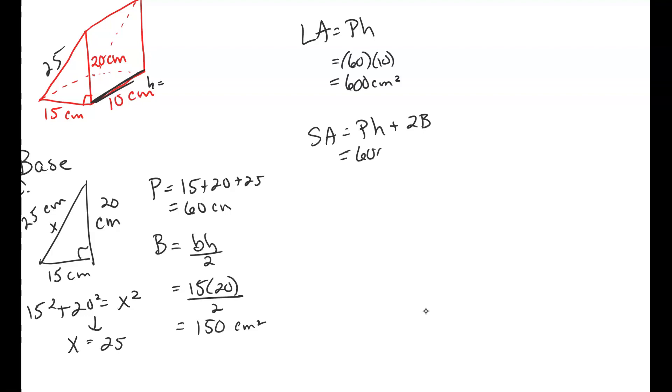It's your lateral area plus 2 times the area of the base, because a prism has two bases. So we put the lateral area in, and then we plug in our value for the area of the base, which is 150. And we get 600 plus 300 equals 900 square centimeters. Now here's the thing. Make sure you know how to do an equilateral triangle for a base. Hint, hint of the day.